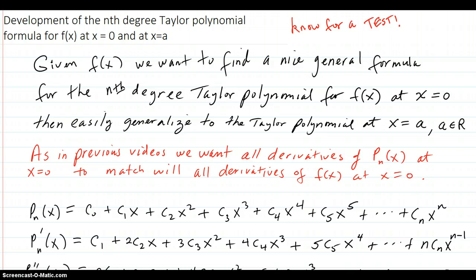As shown in previous videos, we don't want to have to keep developing from scratch the Taylor polynomial every time we want to find one for a function. Given f(x), we want to find a nice general formula for the nth degree Taylor polynomial for f(x) at x equals zero, then easily generalize to getting the Taylor polynomial at x equals a, any real number.